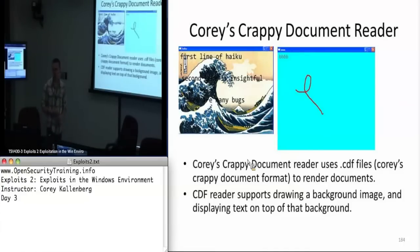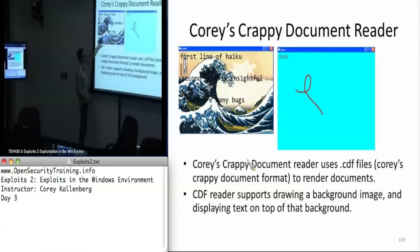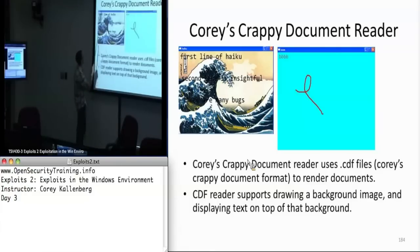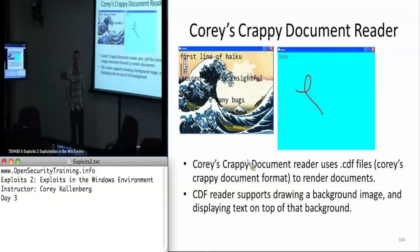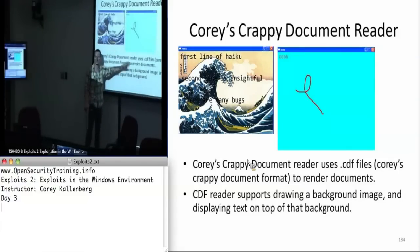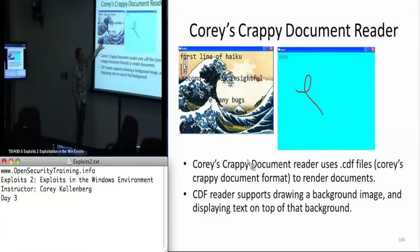The program we're going to be fuzzing is Corey's Crafty Document Reader. It has this proprietary document format — the .CDF format — and it can render pictures, draw some text, an arbitrary number of lines of text, and it can have a title window. When we want to fuzz Corey's Crafty Document Reader, we want to choose a document that exercises all of its features. That's easy in our case because Corey's Crafty Document Reader is very simple — even just this one document exercises all of its features.